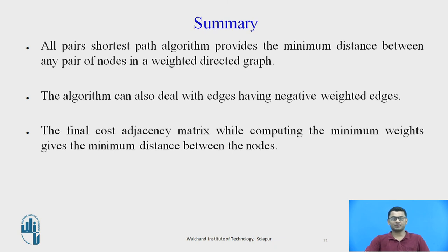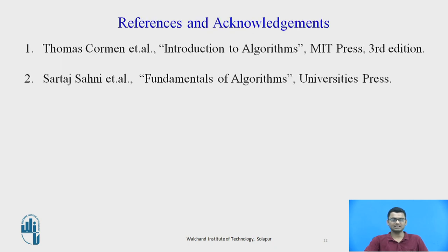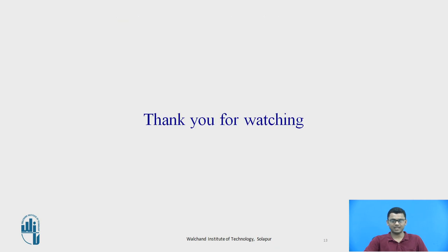In summary: the all pairs shortest path algorithm provides the minimum distance between any pair of nodes in a weighted directed graph. The algorithm can also deal with graphs having negative weighted edges. The final cost adjacency matrix, computed through the dynamic programming approach, gives us the minimum distance between all nodes. Thank you.